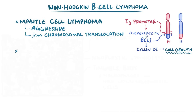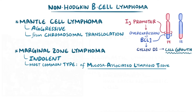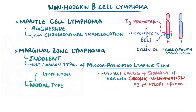A fifth type is marginal zone lymphoma, an indolent lymphoma. The most common type is marginal zone lymphoma of mucosa-associated lymphoid tissue, or MALT. This type is extranodal, mostly happening in the lining of the stomach among individuals with chronic inflammation, like those with Helicobacter pylori infection, a bacteria that causes chronic gastritis. There's also nodal marginal zone lymphoma within the lymph nodes, and splenic marginal zone lymphoma in the spleen.